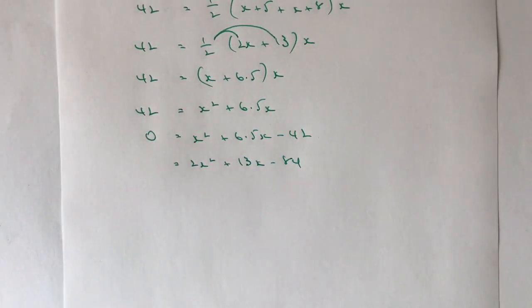I'm going to get 2x squared plus 13x minus 84. And while that's not great, I do know that's something I can use either the quadratic formula for or I can solve using a different method.